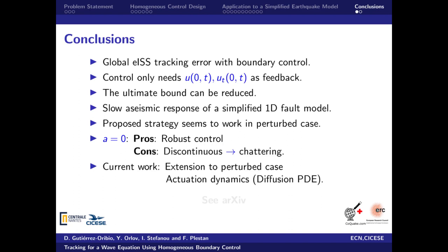To conclude this presentation, we will discuss our results. We obtained a global ISS tracking error using a boundary control that only needs information of the wave equation at the boundary. The ISS result might be weaker than an exponential stabilization of the origin,